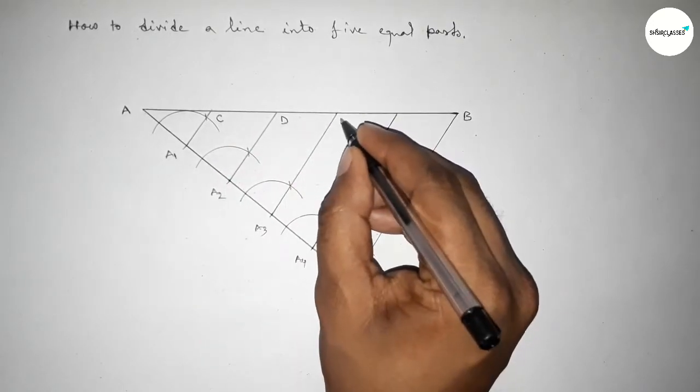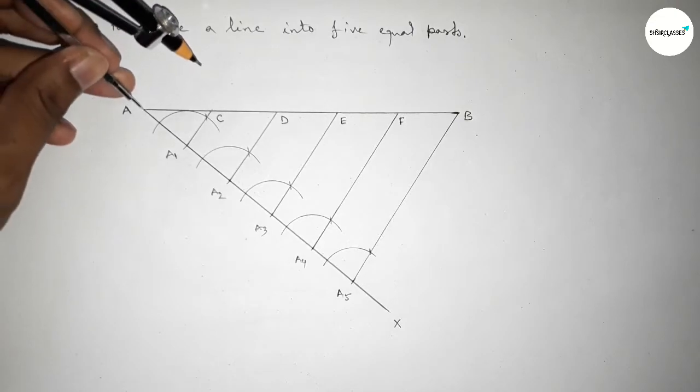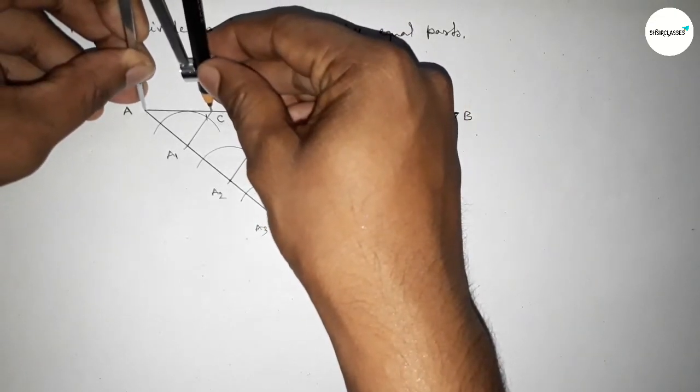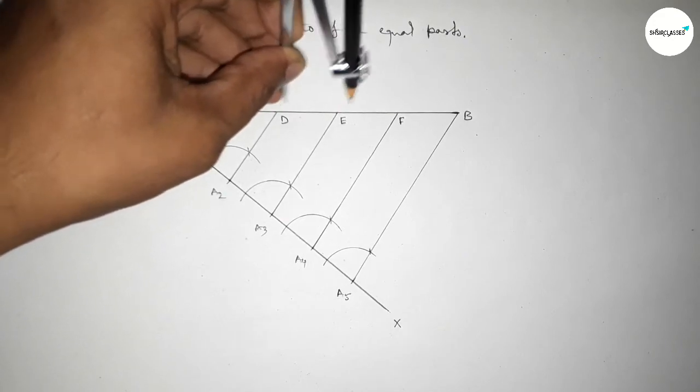Now checking the distance. So this one same, this one equal, and this one approximately equal, and this one also approximately equal.